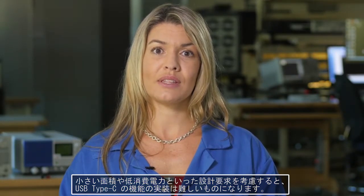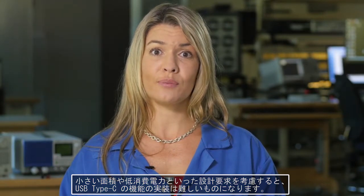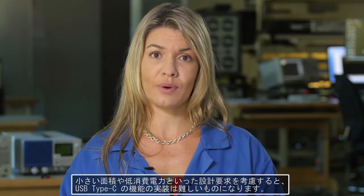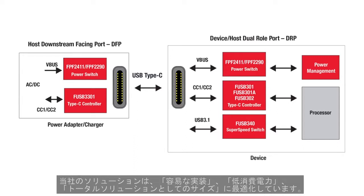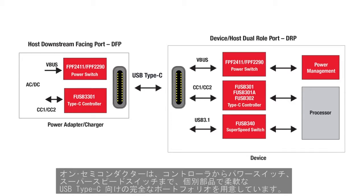Implementing USB Type-C capabilities can be difficult when considering the need for a design's small footprint or low power consumption requirements. Fairchild considered the implementation of USB Type-C from a system and hardware perspective. Our solutions are optimized for ease of integration, low power consumption, and total solution size. Fairchild has developed a complete portfolio of discrete, flexible USB Type-C solutions, from controllers to power switches and super-speed switches.